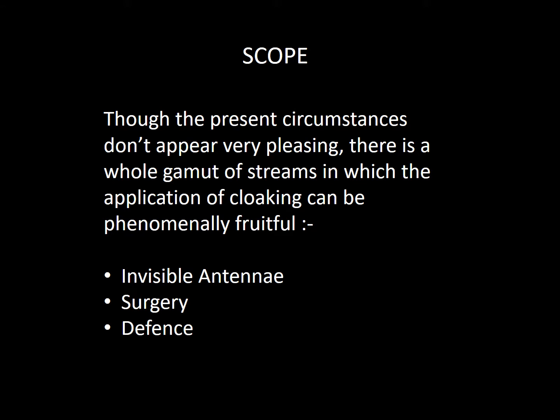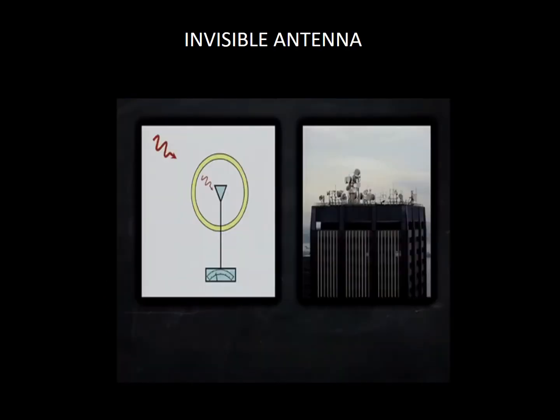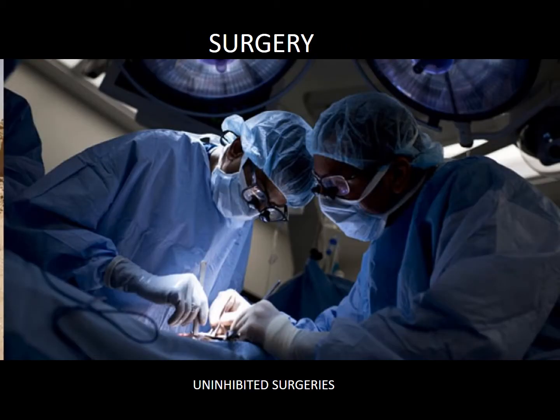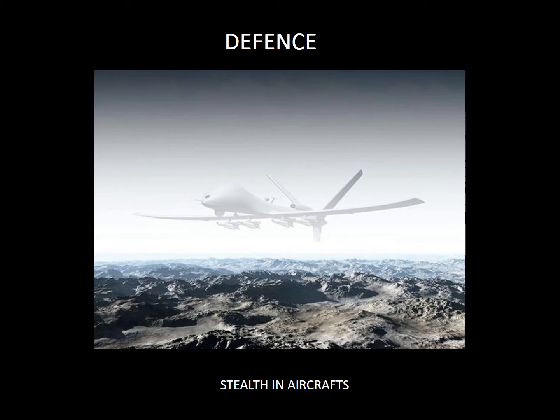Then what are the scopes of this technology and why should we remain interested in it? Though present circumstances don't appear very pleasing, there is a whole gamut of streams in which the application of cloaking can be phenomenally fruitful, which includes invisible antennas, surgery and defence. It is fascinating that antennas can be used to leak out information from other sources without being visible themselves, and this would also reduce interference when a large number of antennas are present in close vicinity. In surgery, surgeons can make use of cloaking to carry out operations without being hindered by their own body parts. Furthermore, aeroplanes can use this technology to fly in sensitive regions without being detected. These applications can only become a reality after a huge spurt in technology and a concerted effort in this direction by the engineers of today.